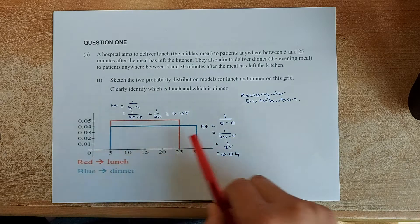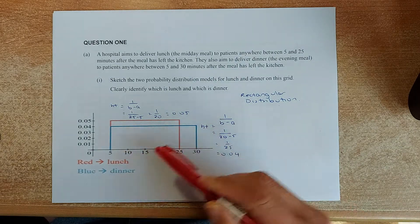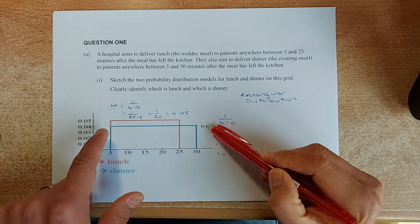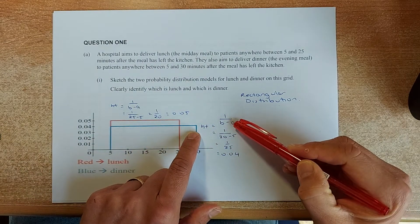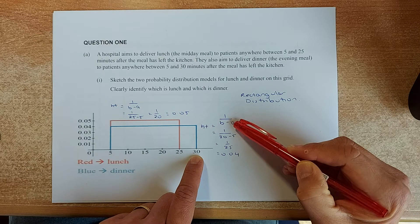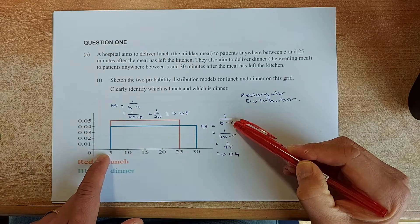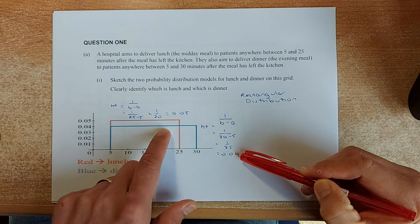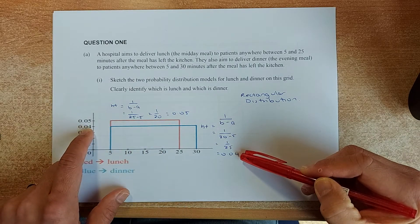Now we are going to know what is the probability. To get the probability of the height here, the height of the blue line, we have to take 1 divided by B minus A. B is 30 and A is the first number 5. So 1 divided by 30 minus 5 is 1 over 25 is 0.04. So the height is 0.04.